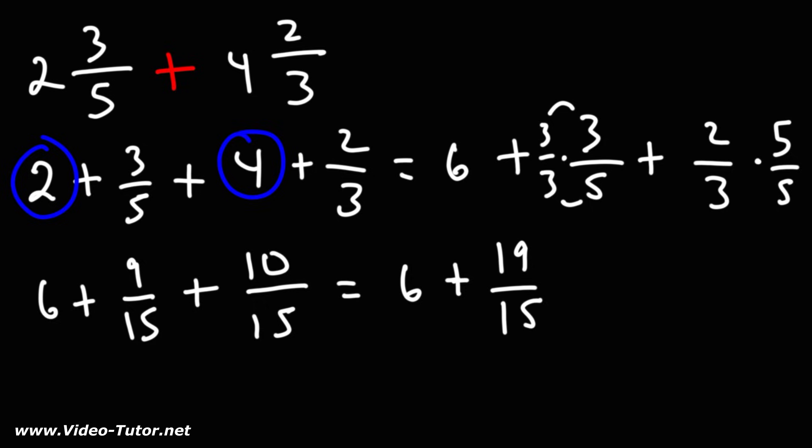Now 19 over 15 is an improper fraction. So what I'm going to do is break that apart into two smaller fractions. So 19 over 15, I'm going to write that as 15 over 15 plus 4 over 15.